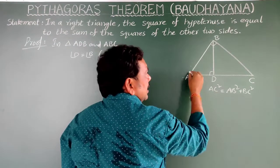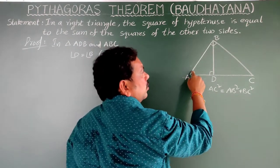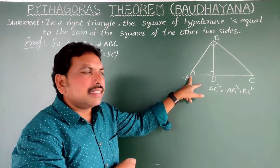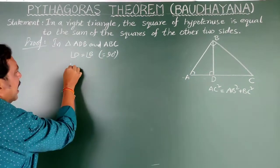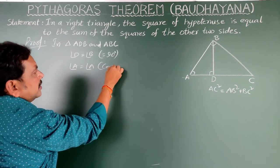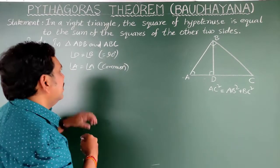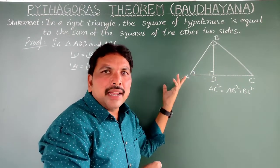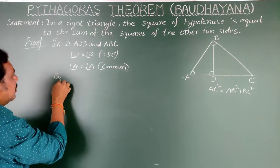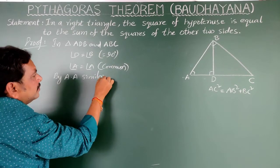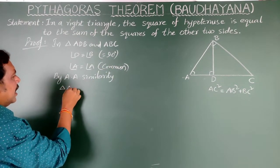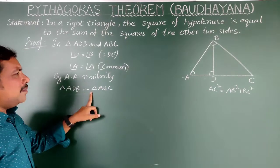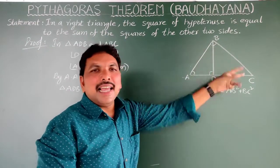Next, angle A in triangle ADB is equal to angle A in triangle ABC — because A is the common vertex, so angle A is common to both triangles. Since two angles are equal in both triangles, by AA similarity, triangle ADB is similar to triangle ABC.